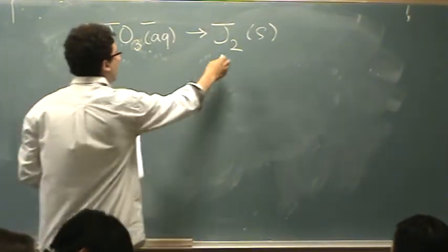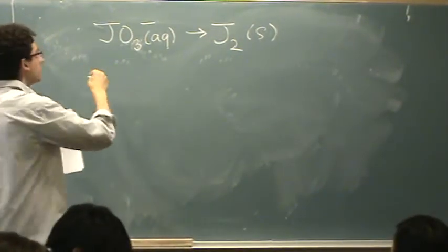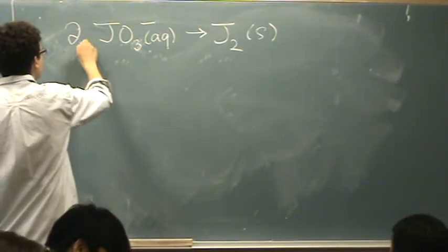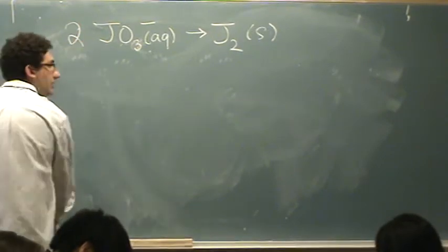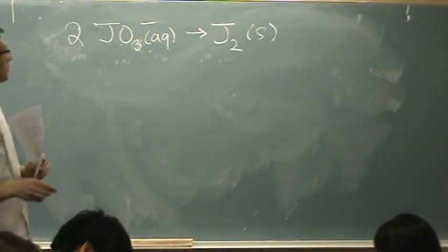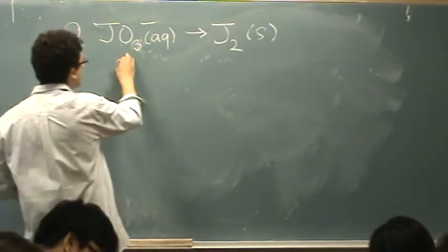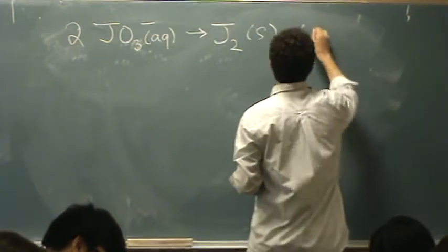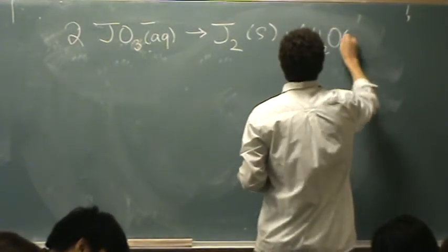First step, you balance whatever is not oxygen or hydrogen—that would be J—so you need two on each side. Second step, you balance oxygen with water. There's six oxygens here, so you need six waters here. That's a liquid.